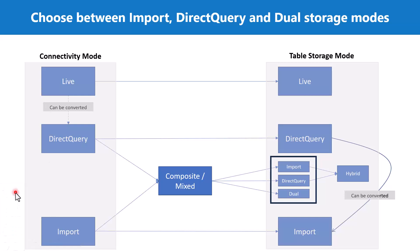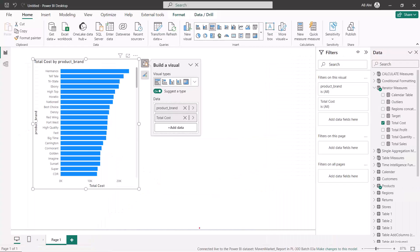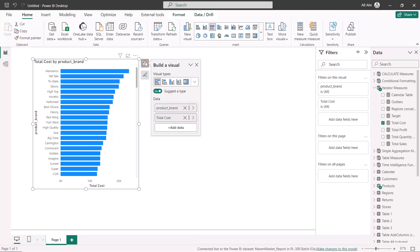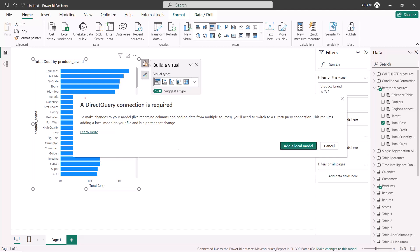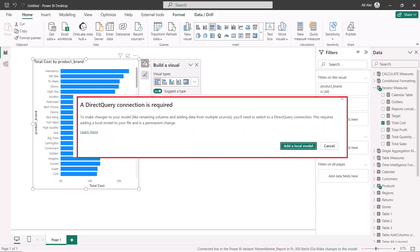Before closing, I want to highlight a diagram we discussed earlier covering Import, Direct Query, and Dual storage modes. The part we hadn't discussed at that time is how a live connection can be converted into a Direct Query connection. Coming back to the report, at the bottom it shows 'Connected live to the Power BI dataset' with the dataset name, and towards the end there is a clickable link that says 'Make changes to this model.'